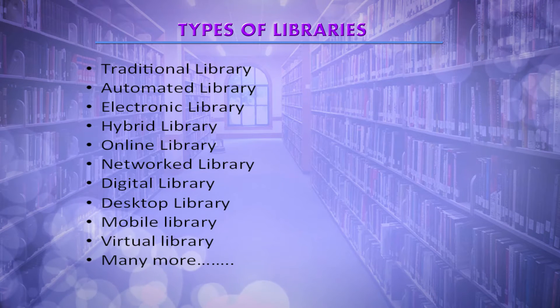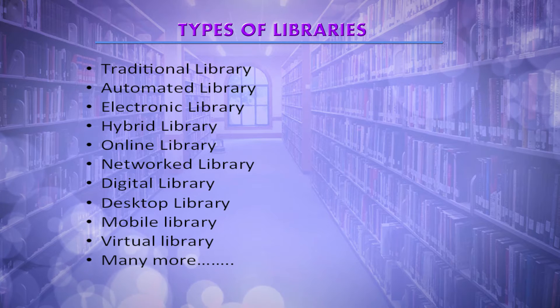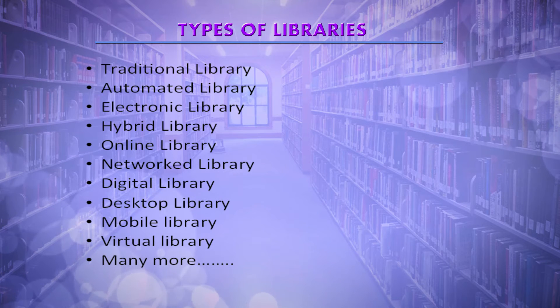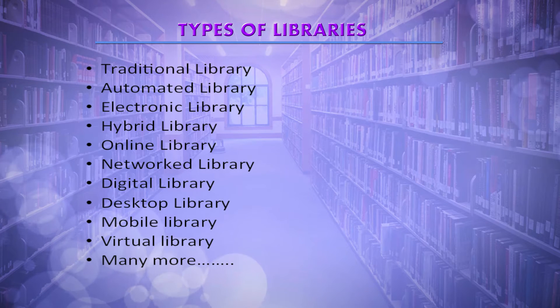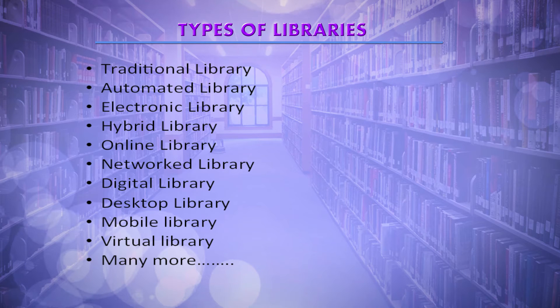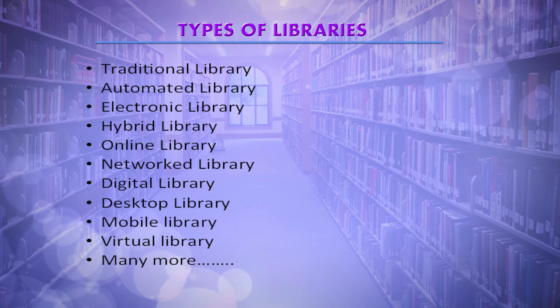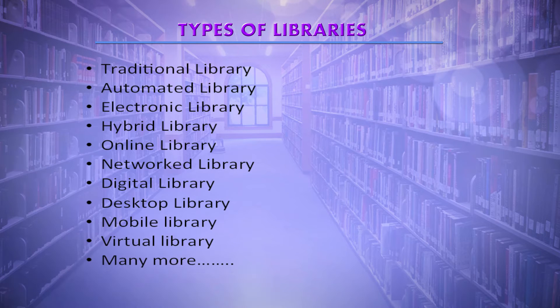So, just for a recap, I have given here a list of the different types of libraries: the traditional library, automated library, electronic library, hybrid library, online library, network library, digital library, desktop library, mobile library, virtual library, and there are many more types of libraries depending on its functions like academic library, public library, research libraries, corporate libraries, and so on.